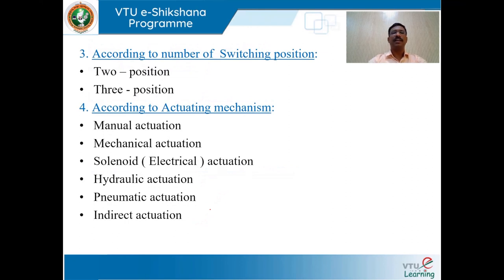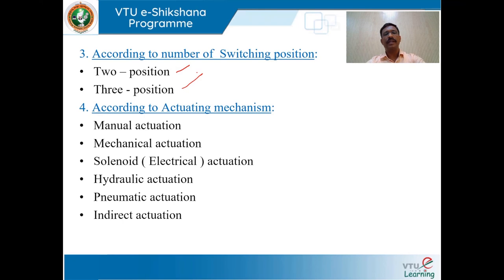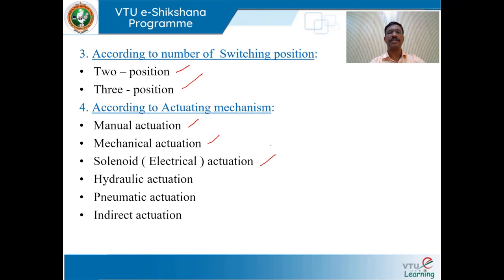DCVs are classified according to number of switching positions — either 2-position valves or 3-position valves. According to actuating mechanism, they are classified as manual actuation, mechanical actuation, electrical actuation, hydraulic actuation, pneumatic actuation, and indirect actuation.